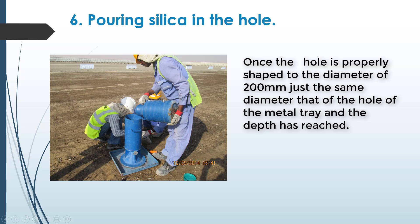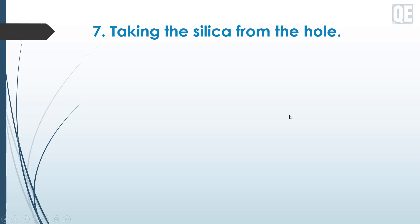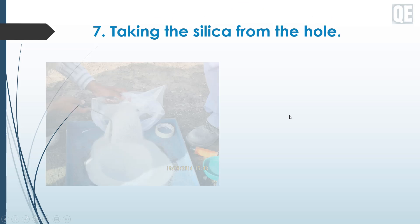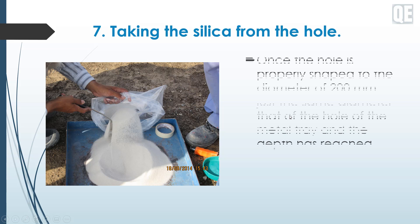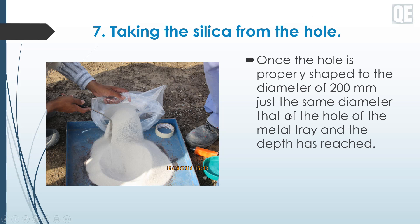Number seven: taking the silica from the hole. Once the hole is fully filled with silica, remove the silica and place it into an extra container. It may be used again for the next set of compaction tests.